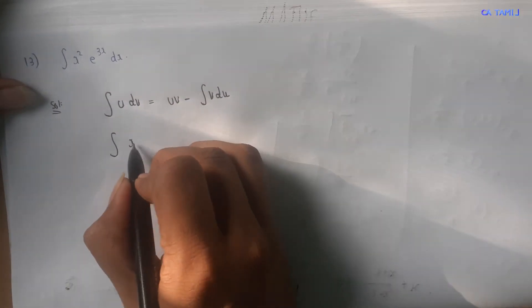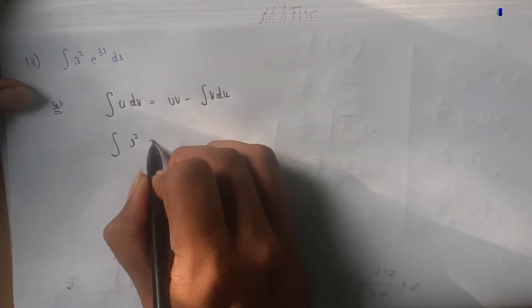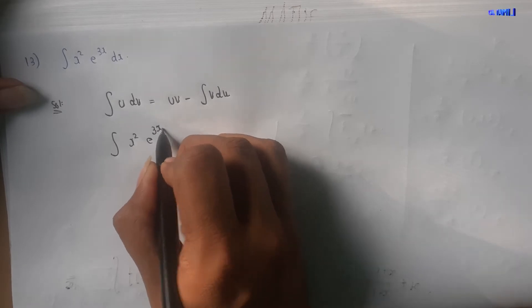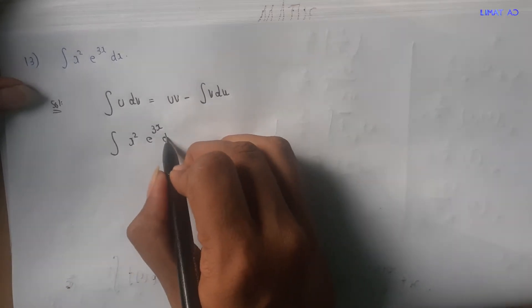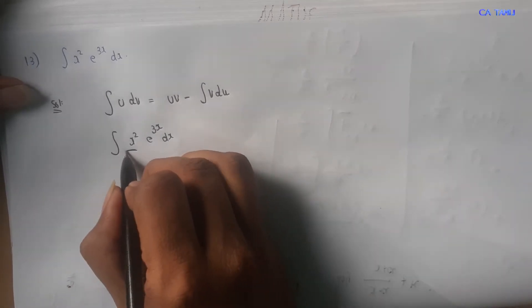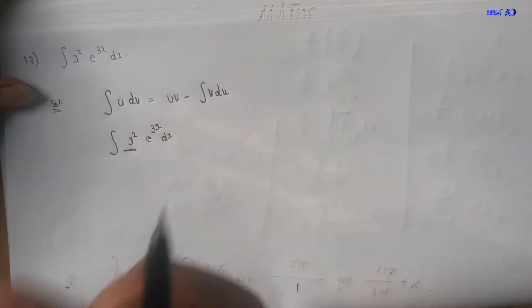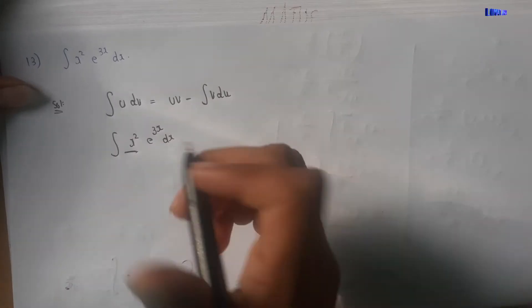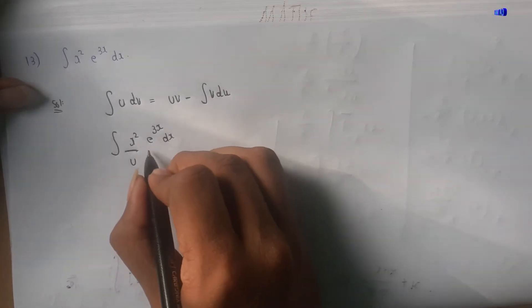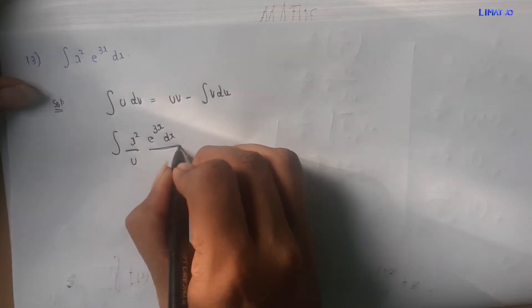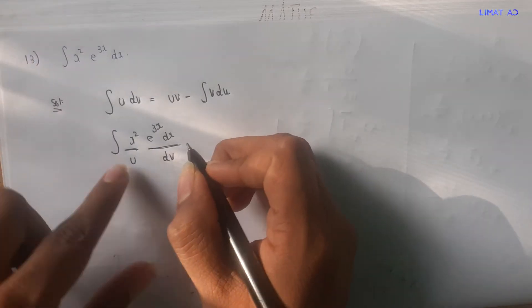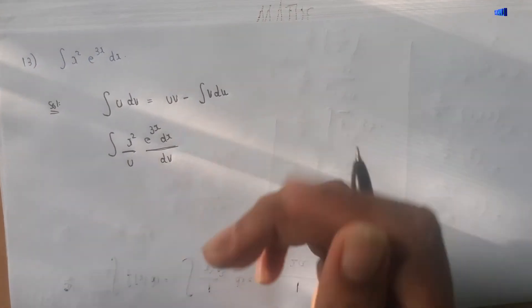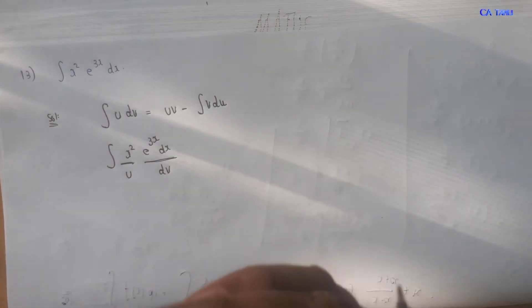The integral we need to evaluate is x squared times e power 3x dx. This is the first term. We assign u to the first part and dv to the remaining part. So u equals x squared, and dv equals e power 3x dx. These are the two important steps.